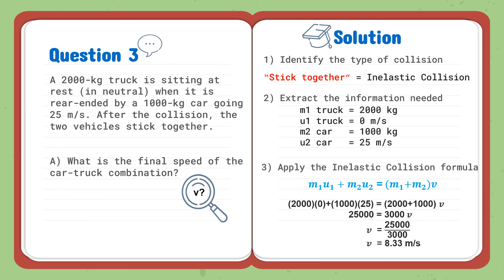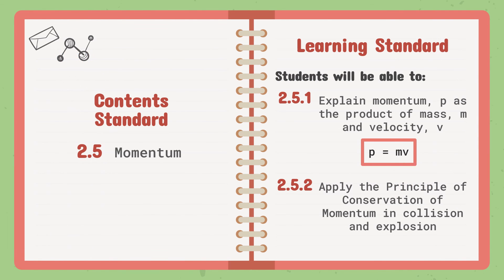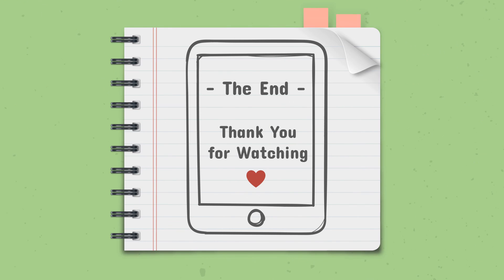To wrap up, we have covered: explaining momentum P as the product of mass M and velocity V, written as P equals MV, and applying the principle of conservation of momentum in collision and explosion. That's it for today. Thank you for watching and thank you for staying until the end.